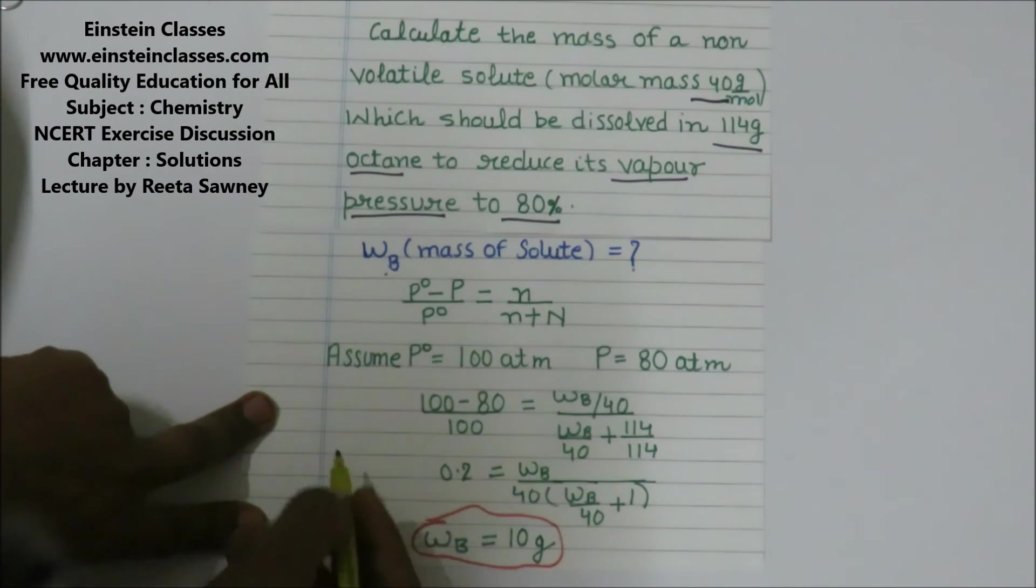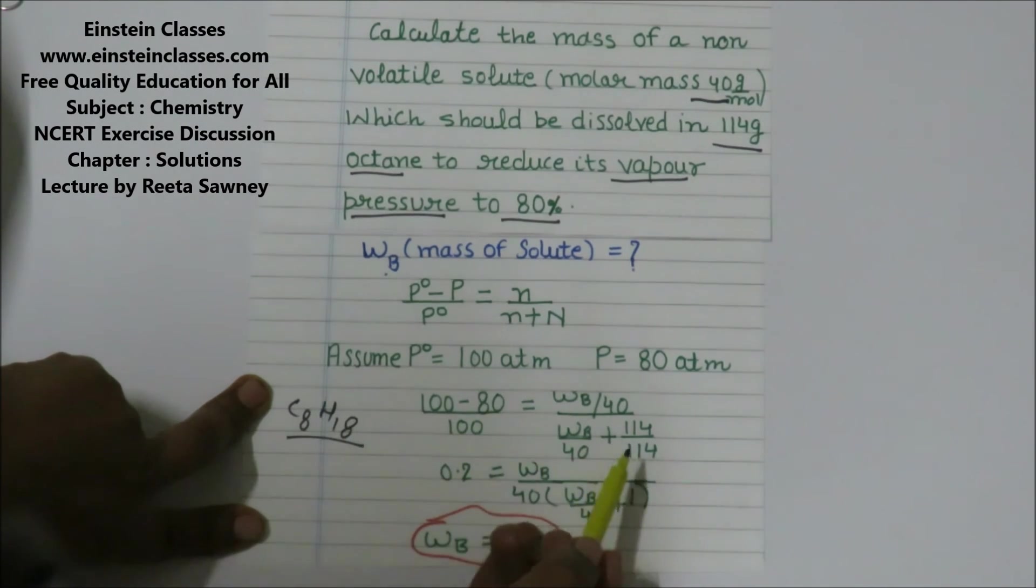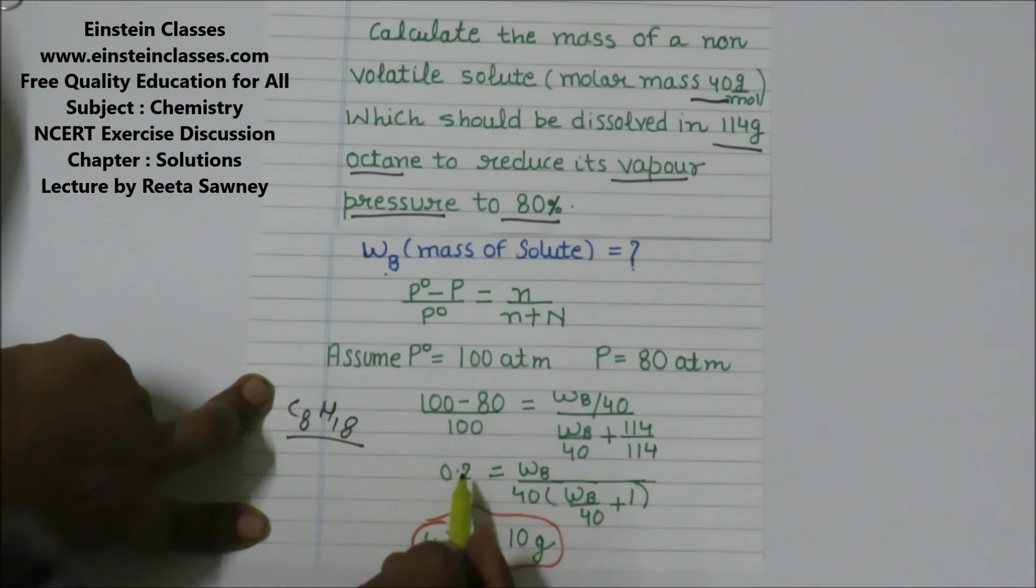The octane is C₈H₁₈, so carbon atomic mass is 12, H is 1, and it will come out to be 114. This relative lowering in vapor pressure by solving will come out to be 0.2.